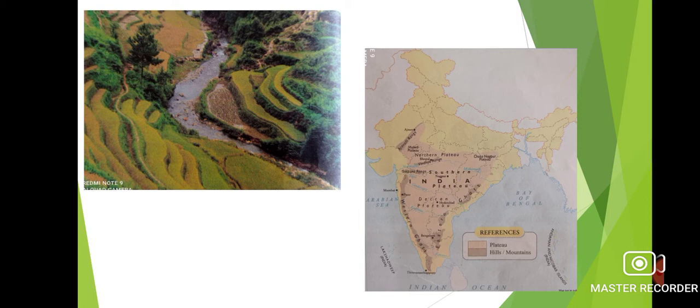A plateau is a type of landform that looks like a huge flat table — higher than the surrounding area, often with steep slopes on one or more sides. It is not as high as a mountain and not as flat as a plain. If you look at the map of India, the southern part is surrounded by water on three sides — such a landform is called a Peninsula. The plateau stretches from central India to the southern tip and is divided into two large parts by the river Narmada: the Central Highlands in the north and the Deccan Plateau in the south.